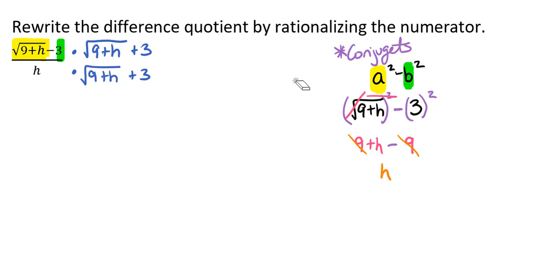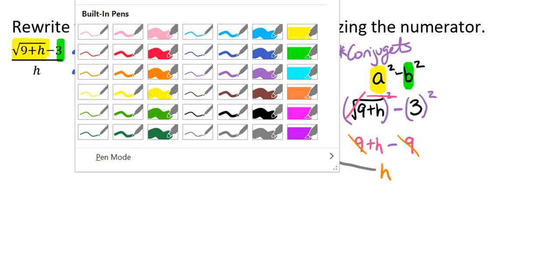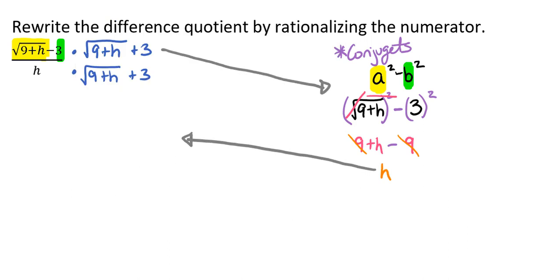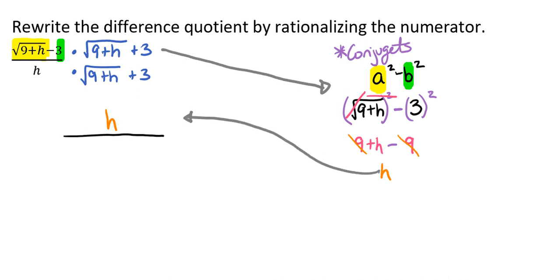So let's recap. We've multiplied the numerator and the denominator by the conjugate, which took us to this spot right here, which got us our simplified answer, which we are now going to write back in fraction form. So on the numerator we have our h, and now we just need to write down our denominator. So here we have h times the square root of 9 plus h plus 3.